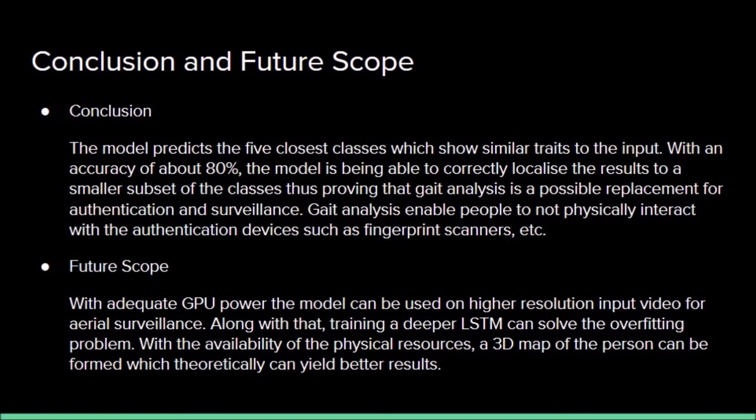There might be a question: why 5 classes, and how is predicting 5 classes a good result? In medical applications, it is necessary to know how the model has come to its final decision. In a single-class prediction model, finding the reason for that prediction is difficult. By predicting multiple classes, doctors or specialists can cross-examine why those 5 classes have been predicted. In security applications, when the number of people recognized is small — less than 10 — it is easier to make a single-class prediction.